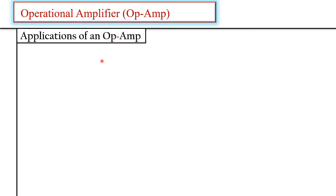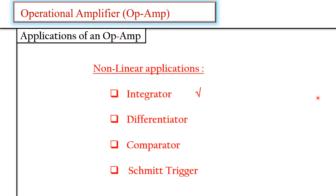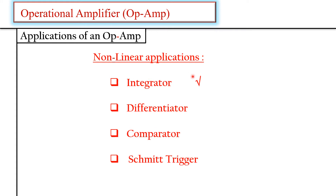Let us see the applications of op-amp. The non-linear applications — circuits in which the shape of the output signal is different from the input — are called non-linear circuits. In this video, we will cover four non-linear applications: integrator, differentiator, comparator, and Schmitt trigger.